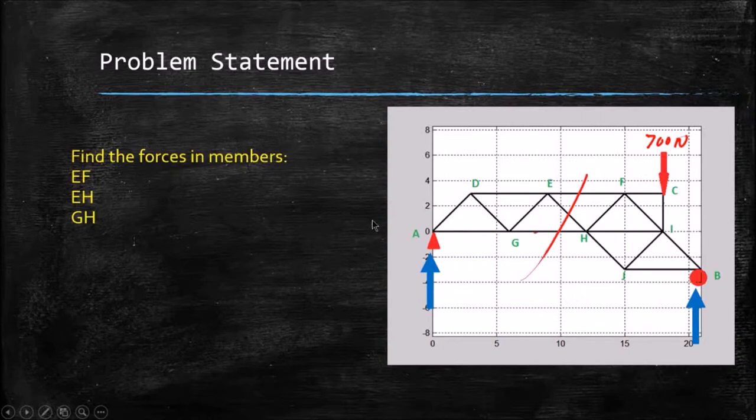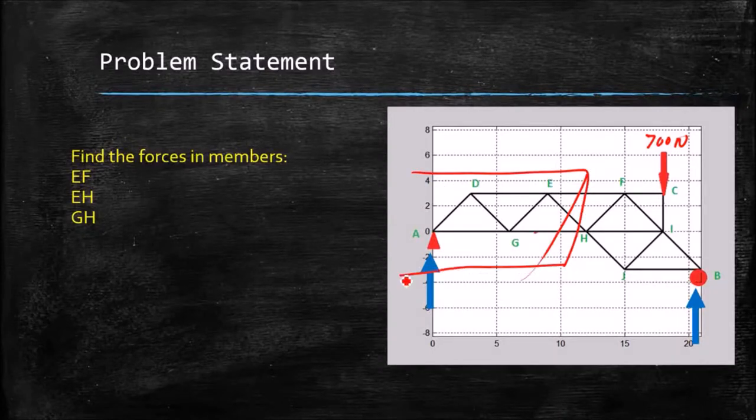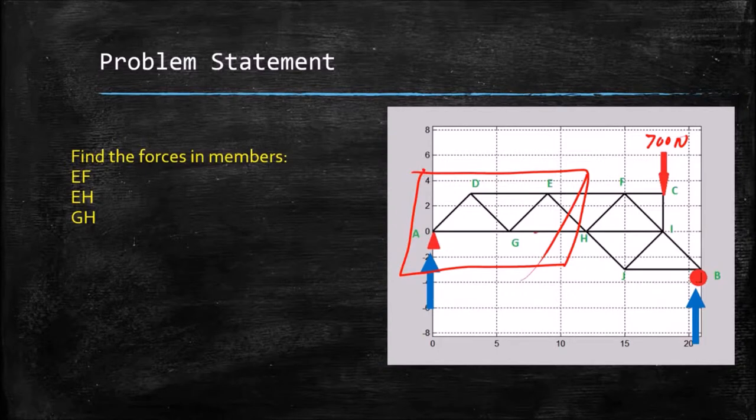First step is I want to find the reaction forces, because assuming that this truss is stable, any sub part of that truss, if I just cut out this piece of the truss, is going to be stable, and we can apply our rules of statics. But to do that, we need to know the force right here at A.